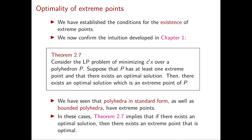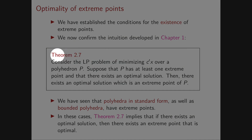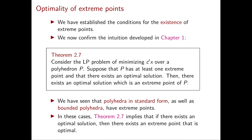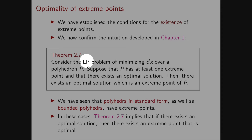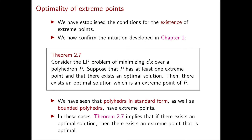The first result that we're going to see in this video is Theorem 2.7. Consider the LP problem of minimizing C transpose X over a polyhedron P. Suppose that P has at least one extreme point and that there exists an optimal solution. Then, there exists an optimal solution which is an extreme point of P.